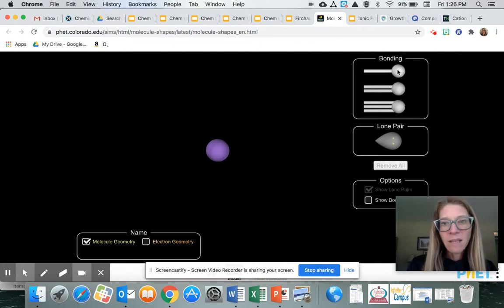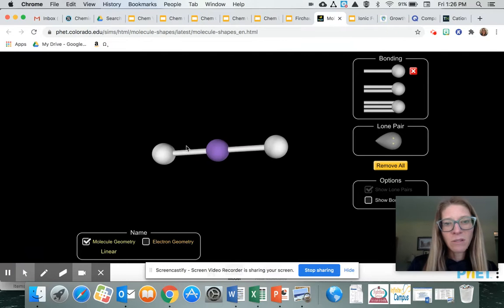To add a single bond, you just click on the single bond up here and drag it into the molecule. You can also drag the molecule around like this.